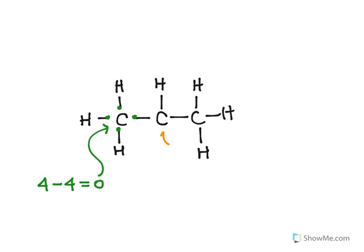Whereas for this carbon over here, we can immediately see that something is a little different. This carbon is supposed to have 4 electrons but this one is only participating in 3 bonds. So we do how many is it supposed to have minus how many does it have: 4 minus 3 is positive 1. So this carbon has a positive 1 formal charge. This is actually called a carbocation, and you'll likely see it down the road in your organic chemistry class.